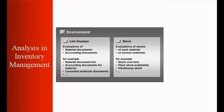The reporting side of inventory management is divided into two parts. The first part is list display, which analyzes different types of documents — for example, material documents created during goods issue, and accounting documents created during goods receipt, goods issue, or invoice receipt. Here you can see material documents, accounting documents, cancelled documents, and other items we'll cover today.